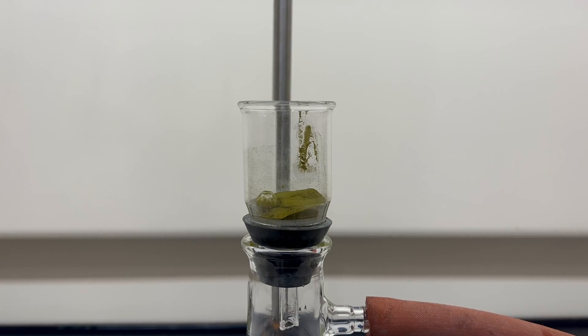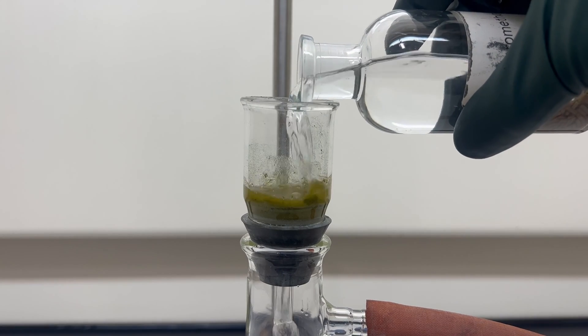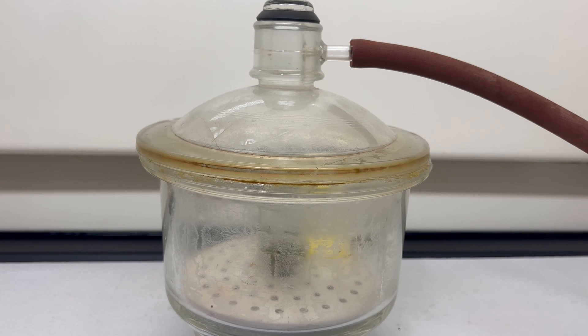The uranium tetrachloride is being washed with dry dichloromethane till the washes run clear. Next the frit is placed into a vacuum desiccator and dried for an hour under vacuum. This will drive off any leftover organic volatile chemicals.